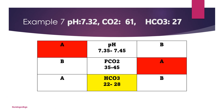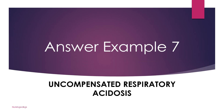Example seven: pH 7.32 — abnormal, towards acidic; PaCO2 61 — very elevated, towards acidic; bicarb 27 — within normal range. It is uncompensated when PaCO2 or bicarb is normal and the other is abnormal. There is retention of carbon dioxide leading to increased acidity, no compensation from the kidneys, and the pH remains below normal range. Answer: uncompensated respiratory acidosis.